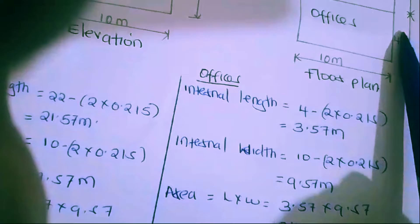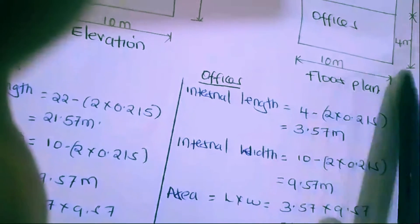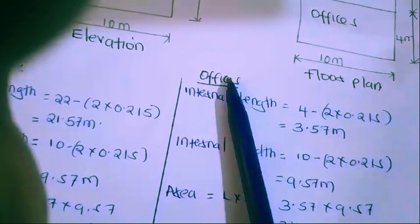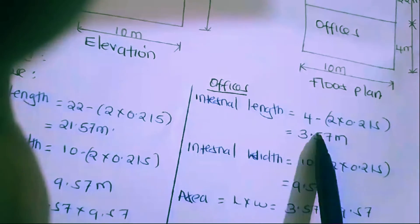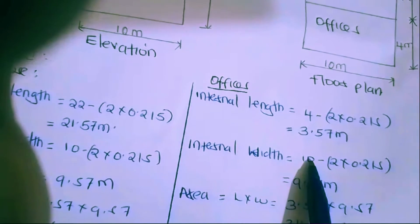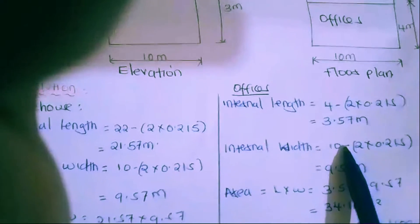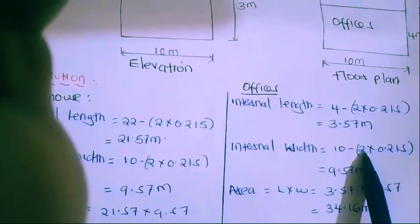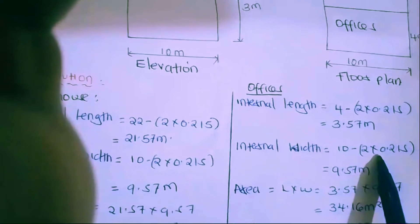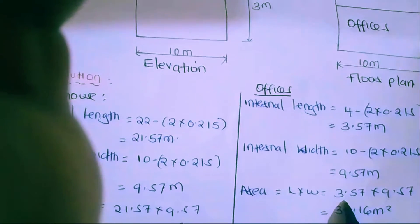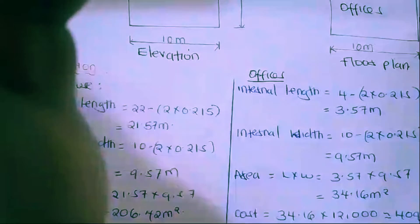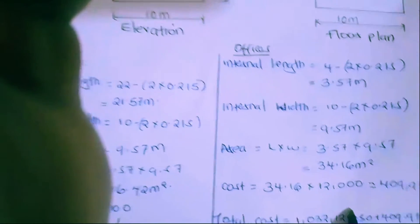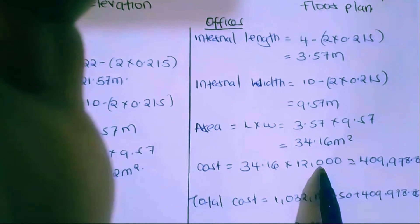Now we proceed to find the cost for the offices. The external length of the office is 4 meters, so the internal length is 4 minus 2 times 0.215, giving us 3.57 meters. The internal width is the same as the warehouse: 10 minus 2 times 0.215 gives us 9.57 meters. Therefore the area is 3.57 times 9.57, giving us 34.16 square meters.